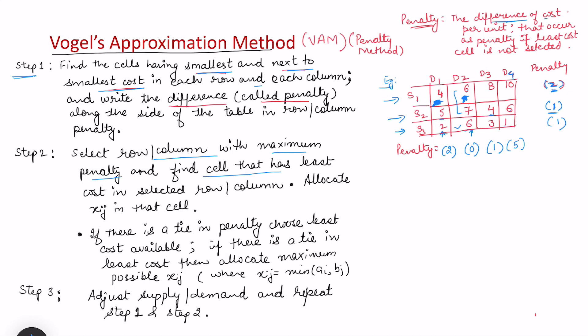Step 2 is to select the row or column with the maximum penalty, then find the cell with the least cost in that selected row or column. Among all row and column penalties together, select the highest — here that is 5. In that highest-penalty row or column, select the cell with the least cost for allocation. This is because we want to avoid the extra cost: not selecting the least cost cell would mean bearing 5 rupees extra per unit.